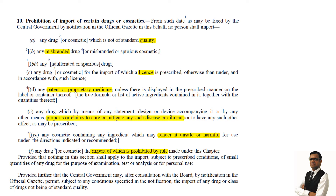Let us elaborate upon the details of prohibition of import of certain drugs or cosmetics. As per the central government notification in the official Gazette, no person shall import any drug or cosmetic which is not of standard quality, any misbranded drug or misbranded or adulterated cosmetics, any adulterated or spurious drug, or any drug or cosmetic for the import of which a license is prescribed otherwise than in accordance with such license. Whatever you are importing, be it a drug or cosmetic, it should be as per the prescribed license.